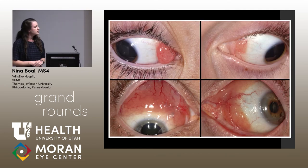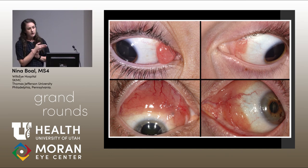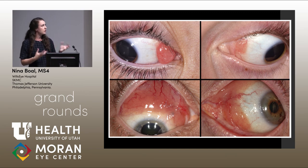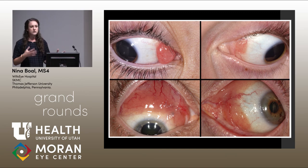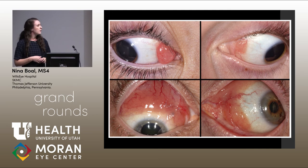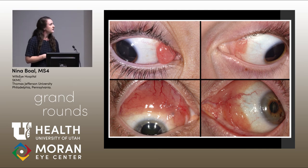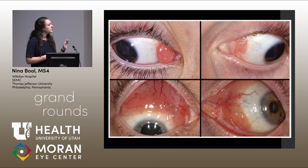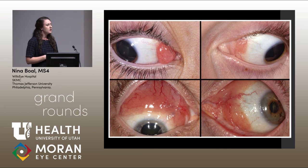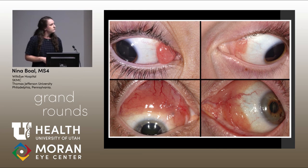The top two images show BRLH in a child — the tumor is located nasally, and while it shows the classic salmon patch coloration, it's actually quite difficult to differentiate from lymphoma on appearance alone. The child's age and nasal location suggest BRLH. The bottom two images show lymphoma extensively involving the superior nasal conjunctiva.